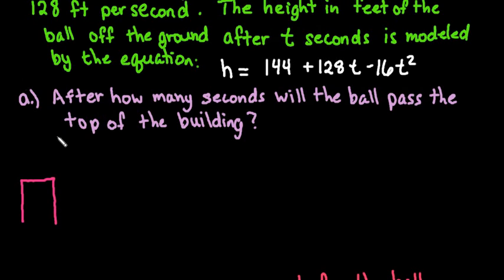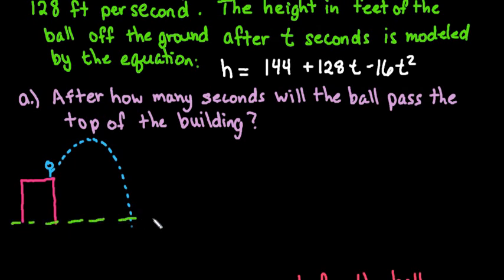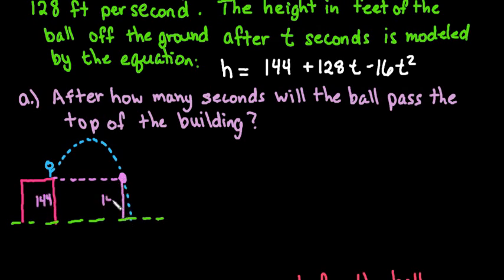We have a building, and on top of this building we have a person standing up here who is going to throw a ball. When he throws the ball up it's going to travel upward and then come back down, and eventually it will hit the ground. For this first problem we're looking for when does it become even with the top of the building again. Our height here is 144, so our height when it becomes even is also going to be 144.